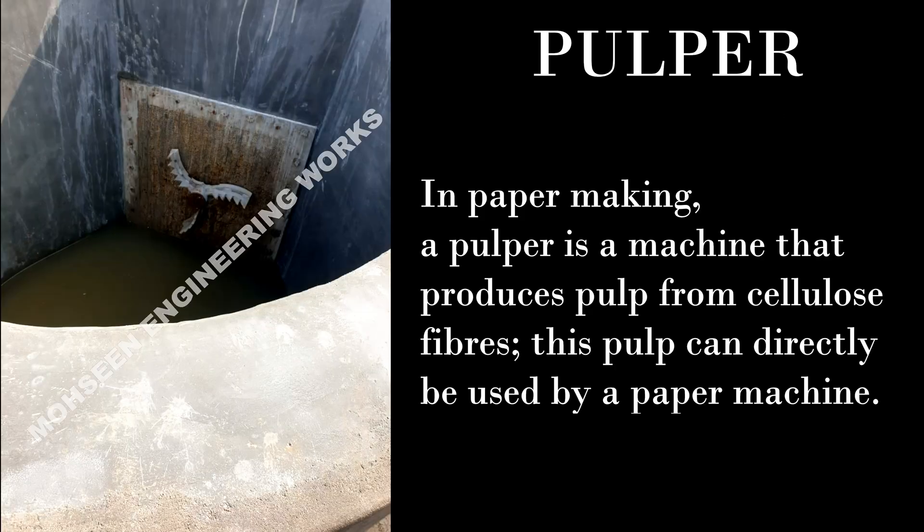Pulper Machine. In paper making, a pulper is a machine that produces pulp from cellulose fibers. This pulp can directly be used by a paper machine.